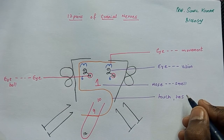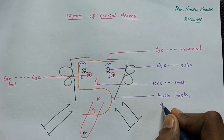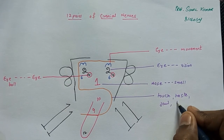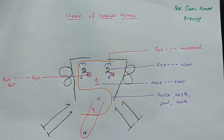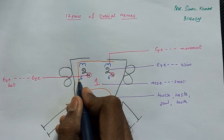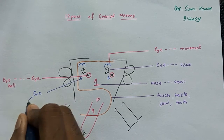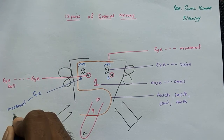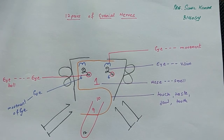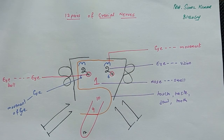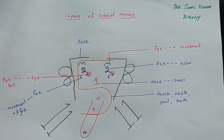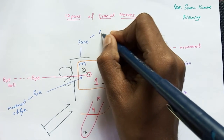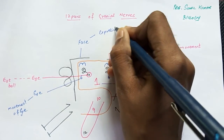Touch, taste, jaw, and tooth movement are all under number five — the trigeminal nerve. Number six is again written near the eye, so it is also related to the eye — specifically the movement of the eye, not the eyeball itself. Number seven is the large shape making up the face outline, so it is called the facial nerve, responsible for facial expression.